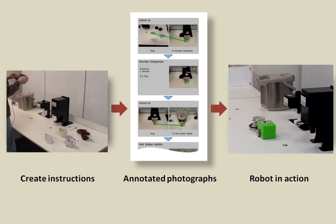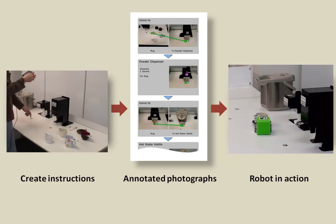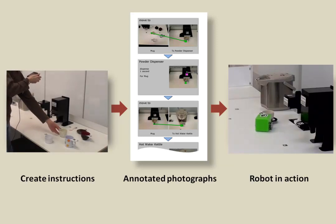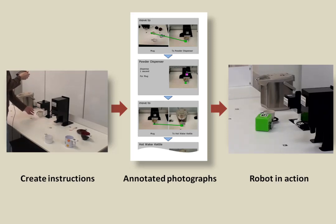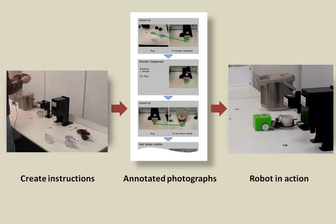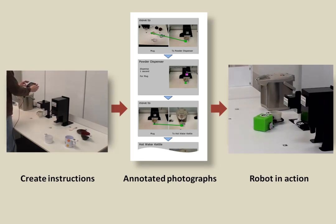In this video, we propose a method of instructing a sequential task to a household robot using annotated photographs. Annotated photographs are created using a handheld touchscreen device. They give explicit instructions to a household robot.